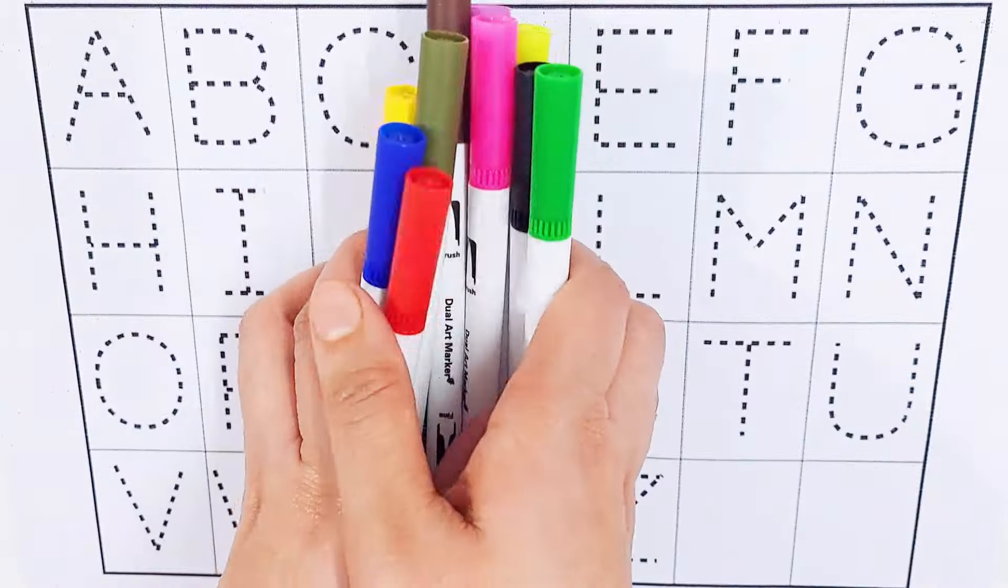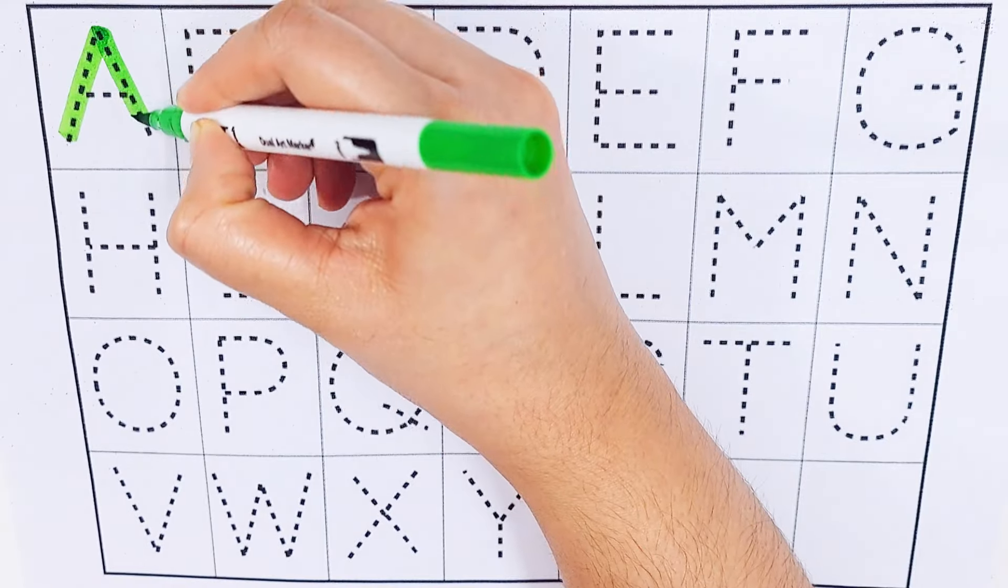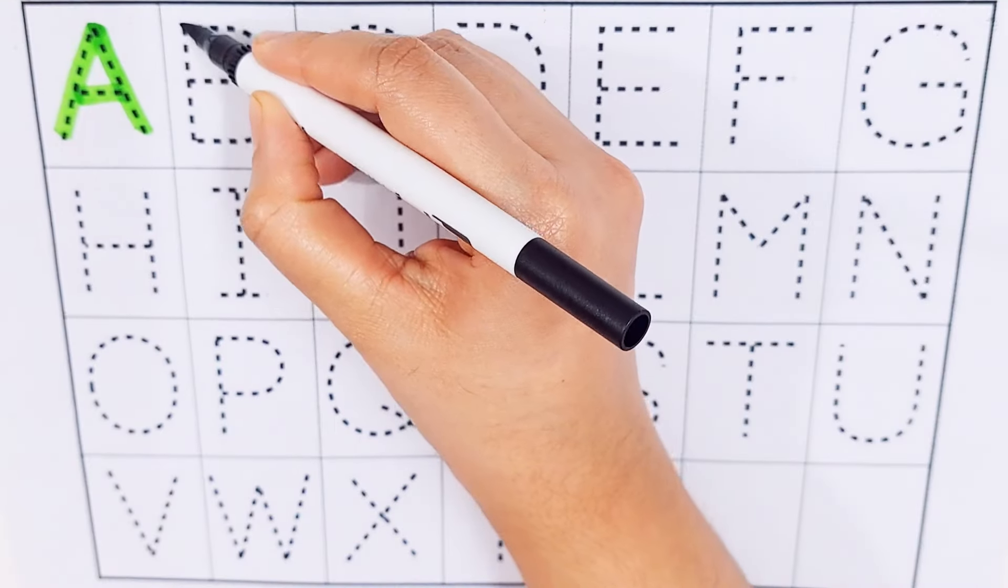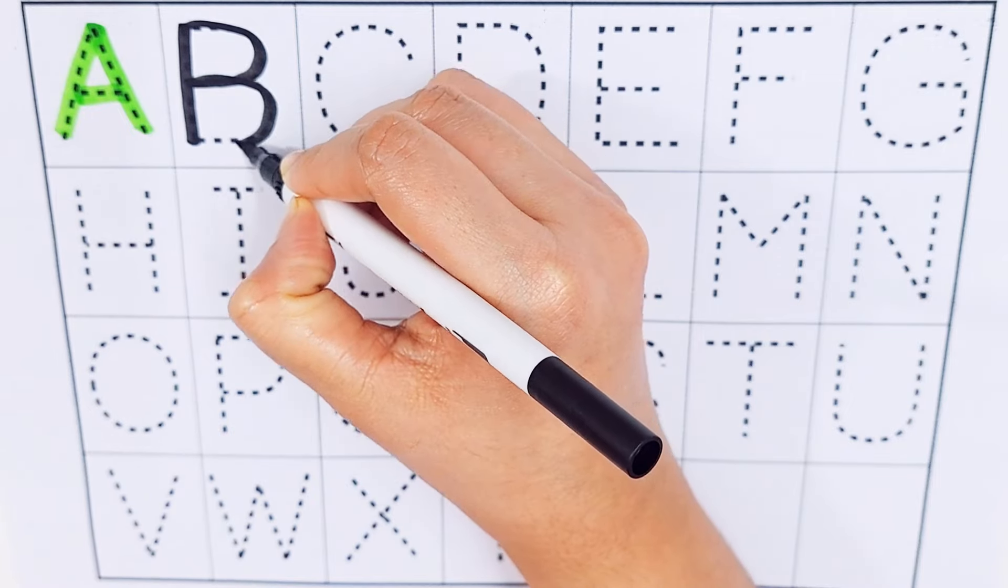Green color. A, A for arrow. Black color. B, B for butterfly.